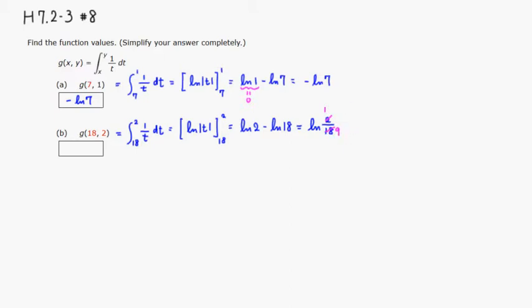Alright, so you have natural log of 1 over 9. And if you want, 1 over 9 can be written as 9 to the negative 1 power. And if you want, you can put this negative 1 right in front. So you would have negative natural log of 9.